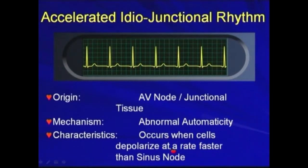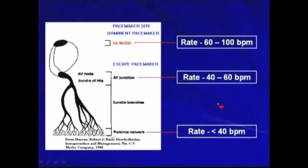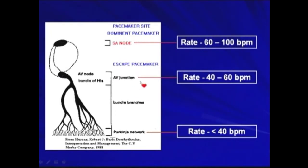It occurs when the cells depolarize at a rate faster than the sinus node. Usually, the sinus node discharges fastest among all tissues. Normally, the sinus node will discharge at a rate of 60 to 100 beats per minute, whereas the AV junction only discharges at a rate of 40 to 60 beats per minute. The ventricular network usually discharges at a rate of less than 40 beats per minute.